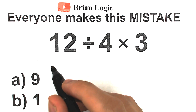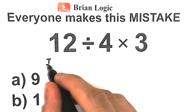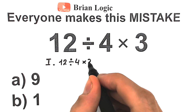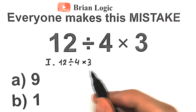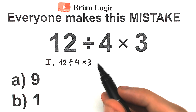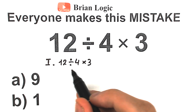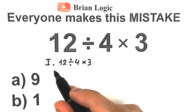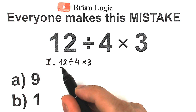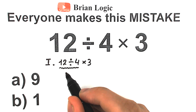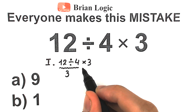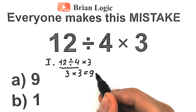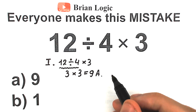So there are two approaches. Looking at the first approach: we have 12 divided by 4 times 3. No matter what expression you have, you should know about the order of operations. According to the order of operations, division and multiplication have the same precedence, so the correct order is to evaluate from left to right. First, take 12 divided by 4, which equals 3, and then multiply by 3, giving us the correct answer of 9. This is option A.